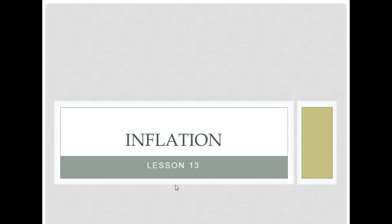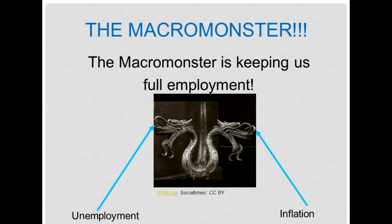Our next lesson is all about inflation. We mentioned inflation briefly in our last lesson because we started talking about something called the macro monster. The macro monster isn't a real monster, but it's a two-headed monster made up of two big problems: unemployment and inflation. We already learned about unemployment. Today, we're going to spend some time talking about the other half of the macro monster — inflation.